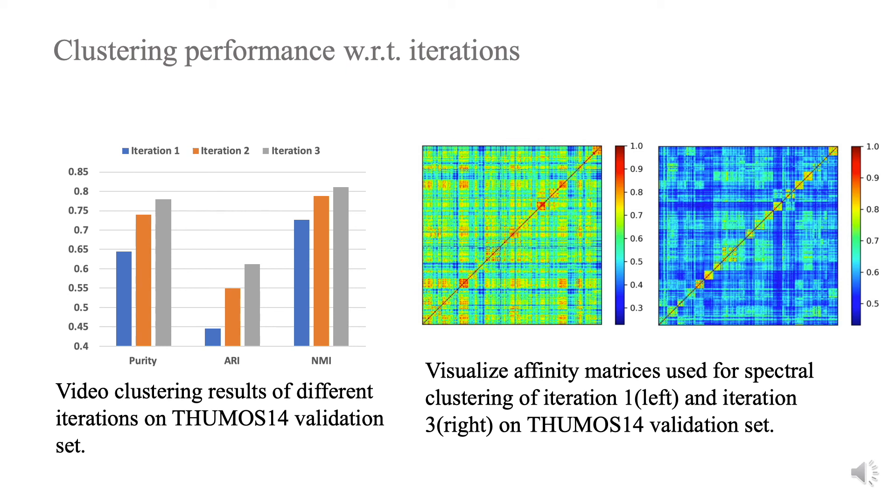we visualize the affinity matrix used for spectral clustering at different iterations. It can be seen that with the help of the class-agnostic temporal attention model, the video representation is more discriminative.